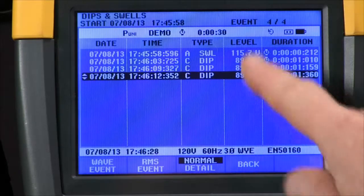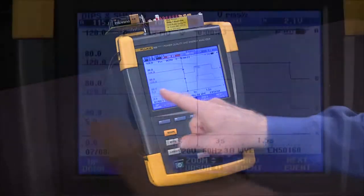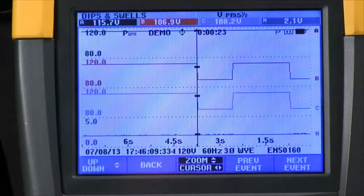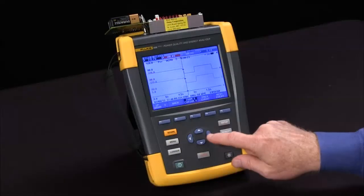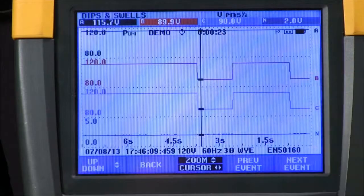If you want to see the trend for a particular event, you simply highlight it. Hit the RMS event and you can see where that dip occurred. You can use your cursor control to highlight something and see the actual measured voltage at that point.